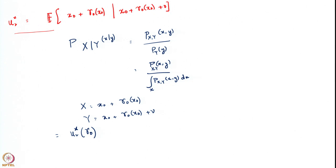What does it mean for this to be a function of gamma_1? Gamma_2 star is a function of gamma_1. But this is not the same as saying gamma_2 star is a composition with gamma_1. When two functions interact, they can do so in two different ways: you can have a composition of f and g, or you can have f as a function of g.